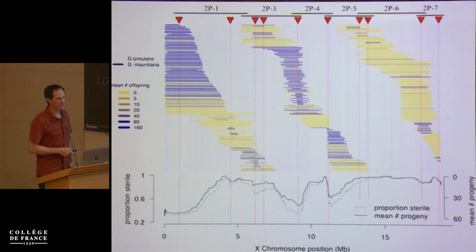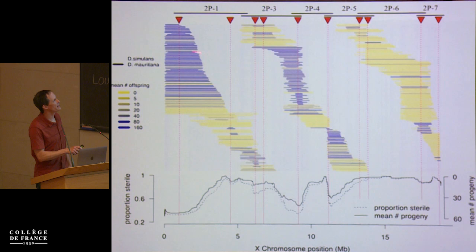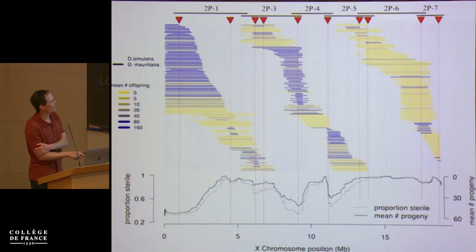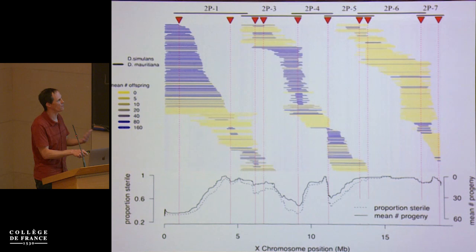In order to understand what's inside these intervals, we undertook meiotic mapping, forcing recombination events within each interval. We got recombinant genotypes, phenotyped them, and genotyped them by sequencing, using a similar approach to what Molly described. Each line is an individual recombinant genotype, and the color indicates average fertility of 10 replicate males. Down here, this is averaged across all lines that have a *mauritiana* SNP at a given position.